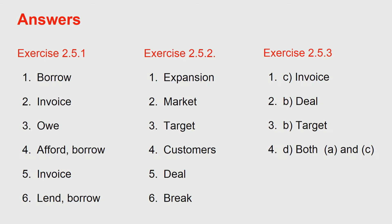Here are your answers — please tally. Exercise 2.5.1: first is borrow, second is invoice, third is owe, fourth is afford or borrow, fifth is invoice, sixth is lend and borrow. Exercise 2.5.2: number 1 expansion, second market, third target, fourth customers, fifth deal, sixth break even.